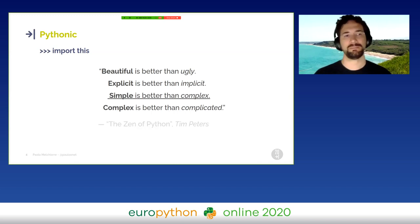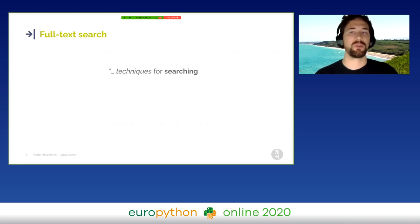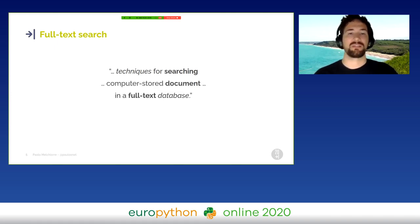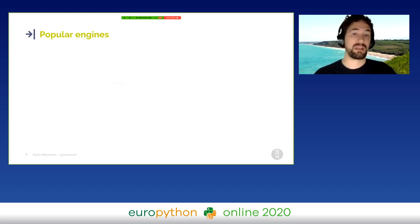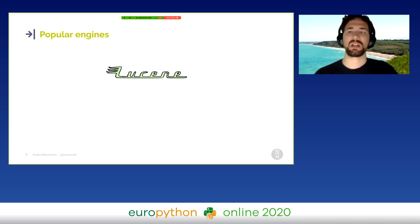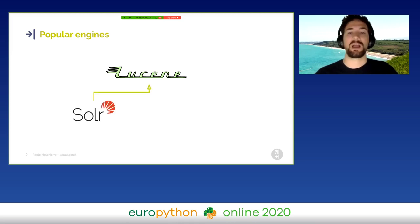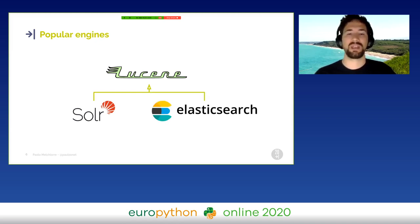Full-text search refers to the technique for searching a computer-stored document in a full-text database. There are a lot of search engines that already provide full-text search. The most popular search engine library is Apache Lucene, an open-source software written in Java. Based on Lucene, there are two very popular search engines: Solr, part of the Apache Software Foundation, and Elasticsearch, a product of the Elastic company.